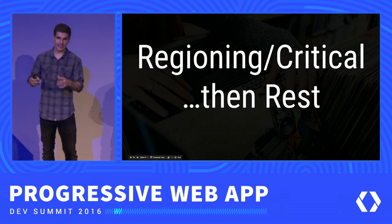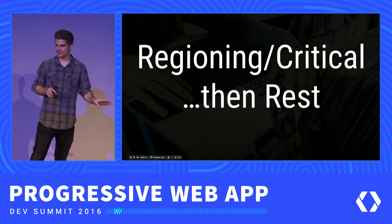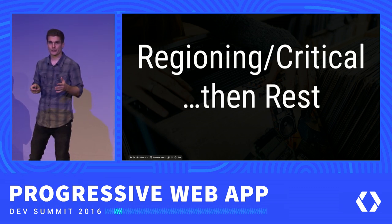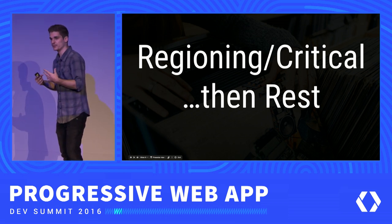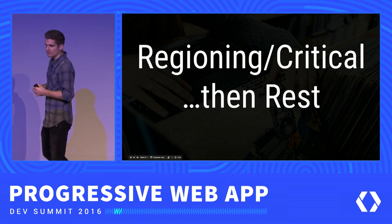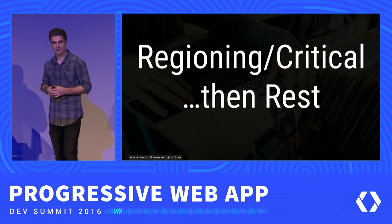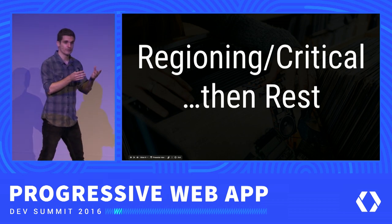Good advice is to use regioning or critical CSS. A common practice is to inline the styles for things you consider critical and defer everything else. This also gives you a chance to prioritize which stylesheets need to be loaded next and in which order, so you have more control over when bandwidth should be allocated. Regioning CSS is the part of the CSS that makes elements assume the size they're going to have once the full styles have been loaded — so elements won't jump around on the page when the full styles come in.